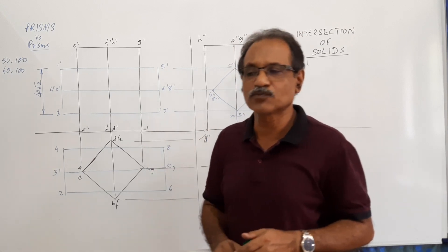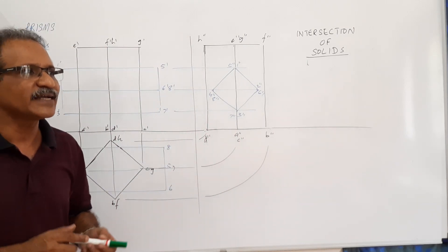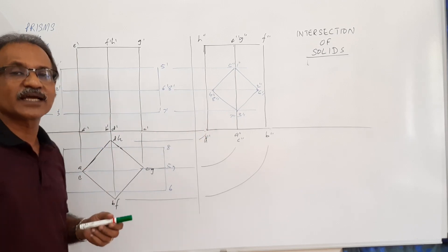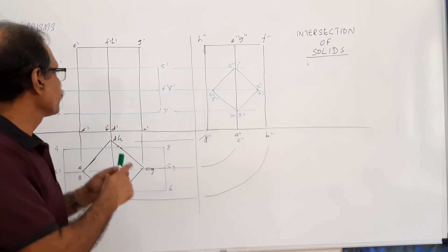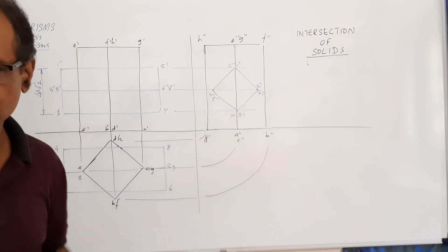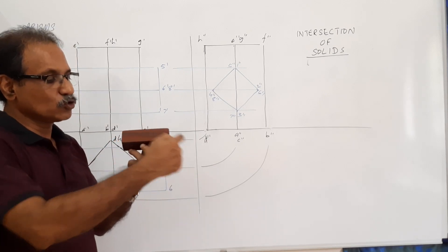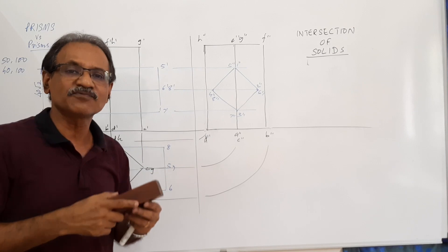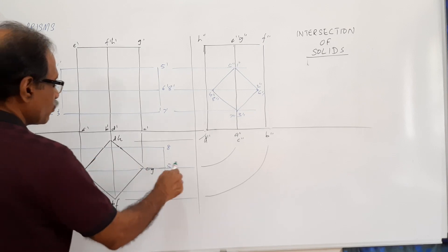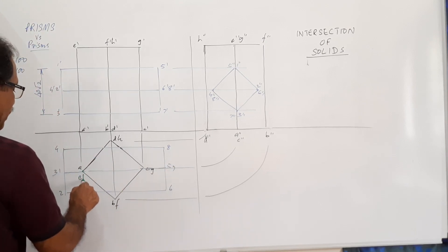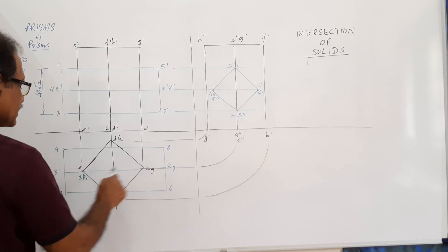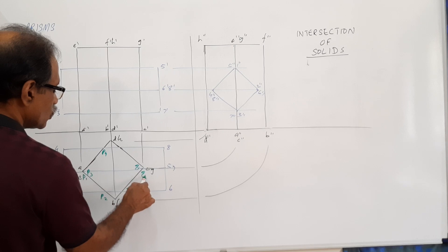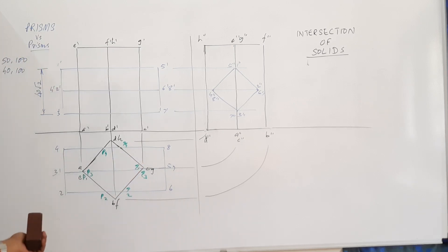Mark where the horizontal edges of the horizontal penetrating prism cut the vertical prism. The horizontal edges are 1-5, 2-6, 3-7, and 4-8. Edge 1-5 cuts the vertical prism at P1; edge 2-6 at P2; edge 3-7 at P3; edge 4-8 at P4. On the other side, the corresponding points are Q1, Q2, Q3, Q4. One side is labeled P, the other Q. The intersection curve in the plan is now complete.